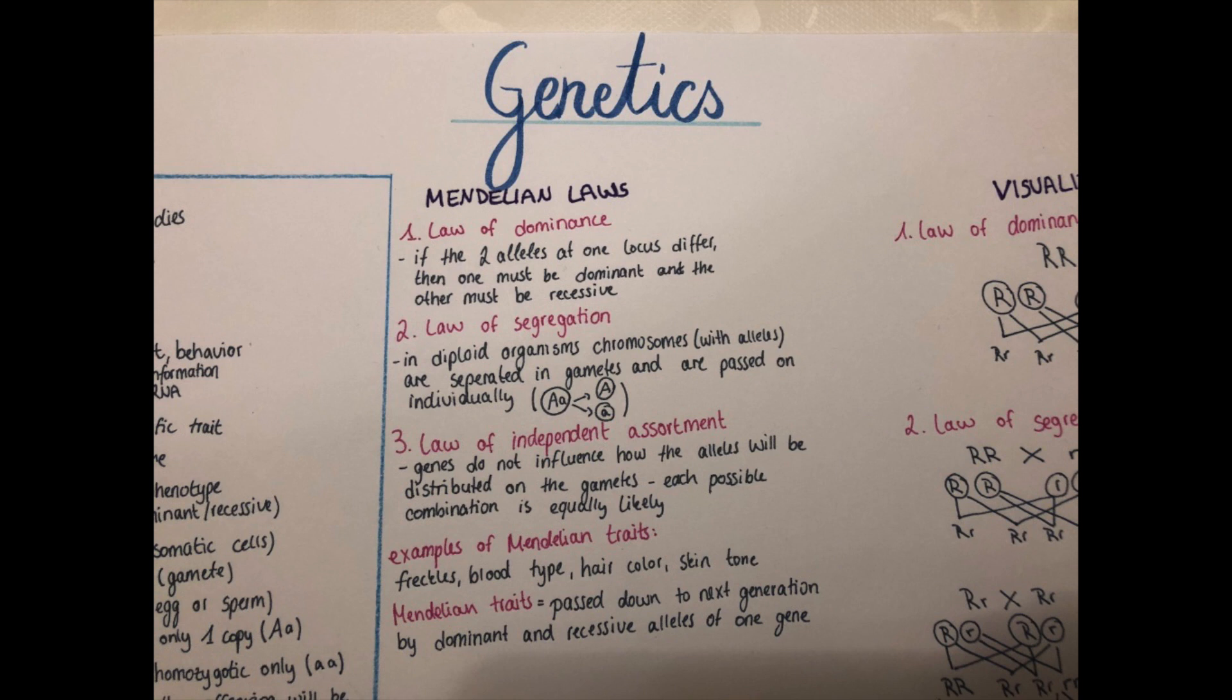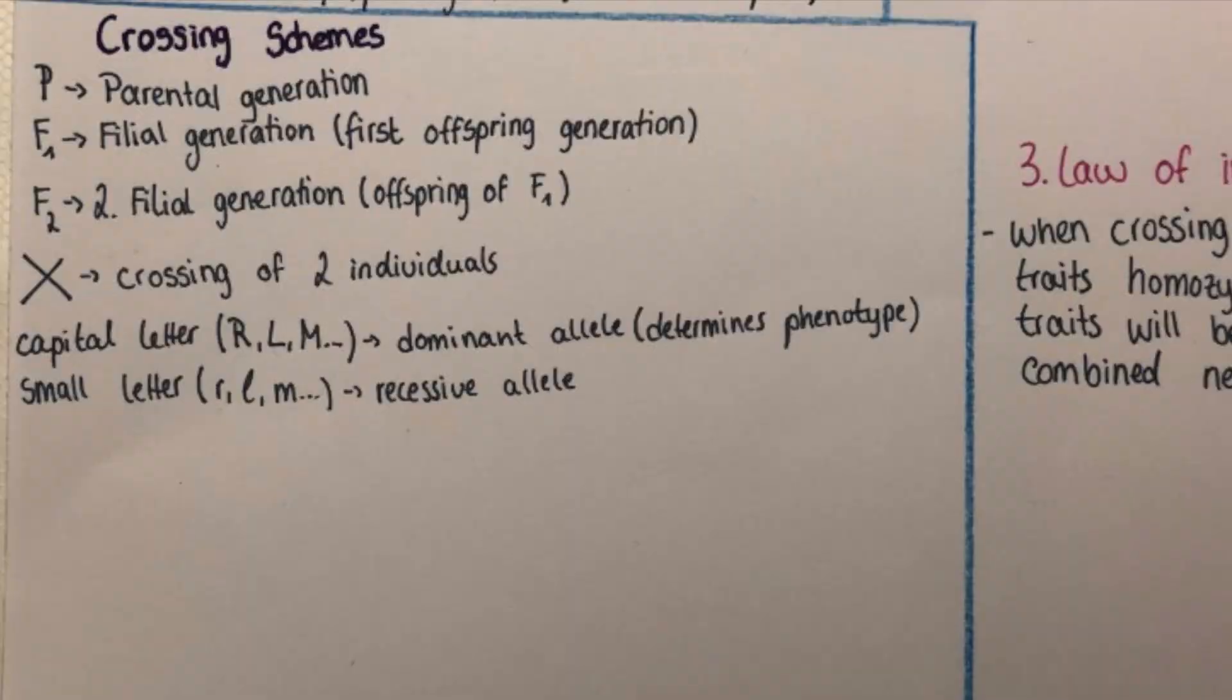I made also a visualization of the laws by using crossing schemes. I will show them to you in a second. But first of all, I want to shortly mention a few codes that are used for crossing schemes. So usually the first generation, the parent generation, is marked with a capital P, meaning the parental generation.